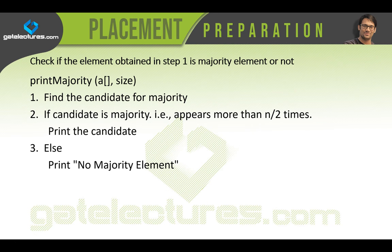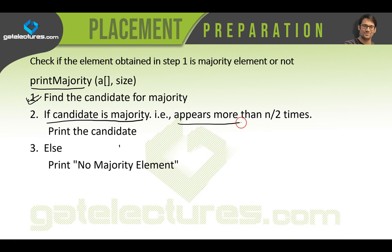We have now implemented the 'find candidate of the majority' step. The next step is to check whether this candidate is actually a majority element or not: if the candidate appears more than n/2 times, print the candidate; else print 'no majority element found'.